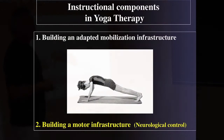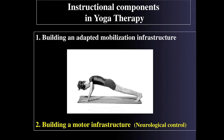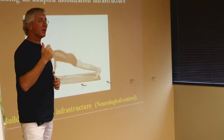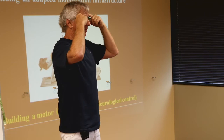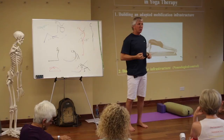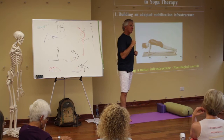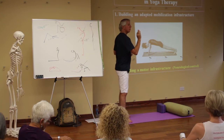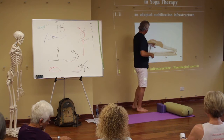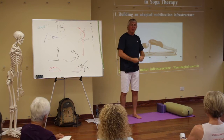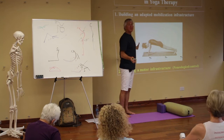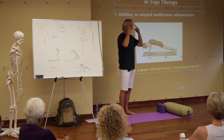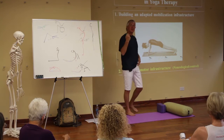Coming to the second component: building a motor infrastructure, what we call neurological control. Neurological control is much harder to gain. This is everything connected to the brain: coordination, differentiated movement, timing, force regulation, and many other components that are dependent on the brain — on the proper commands that the brain sends into the body. We will deal with this because sometimes in yoga the person is strong enough, flexible enough, has everything needed for the posture, but doesn't know how to organize his body. This is something to do with the brain, and it is the most difficult component in treatment.